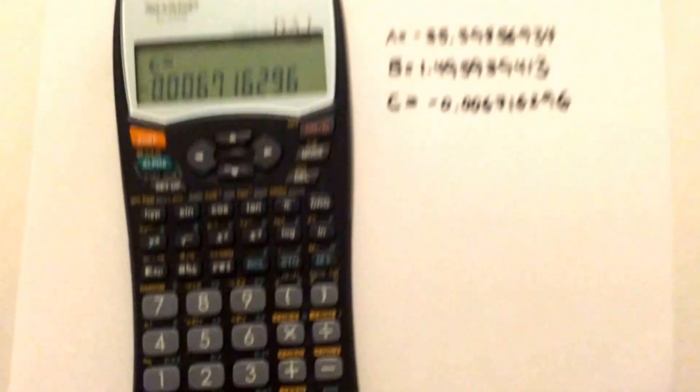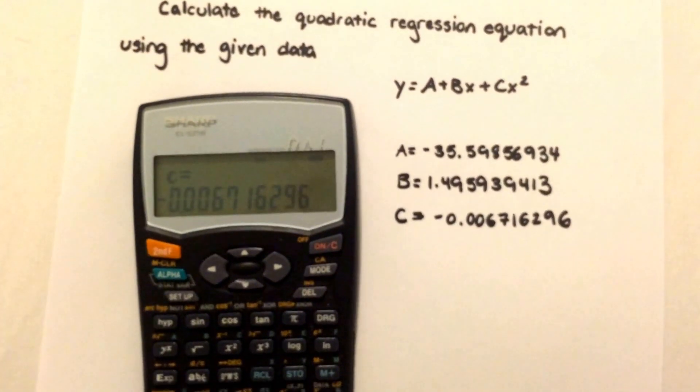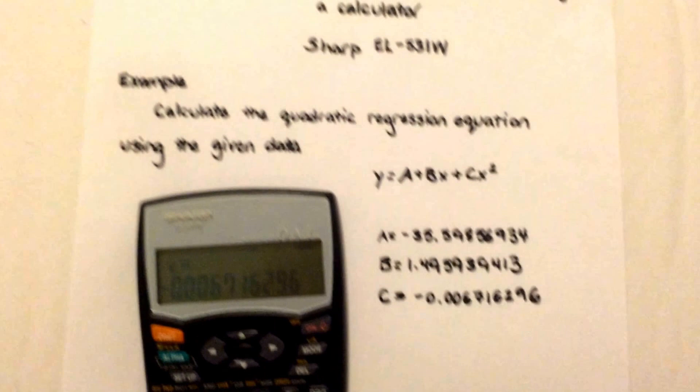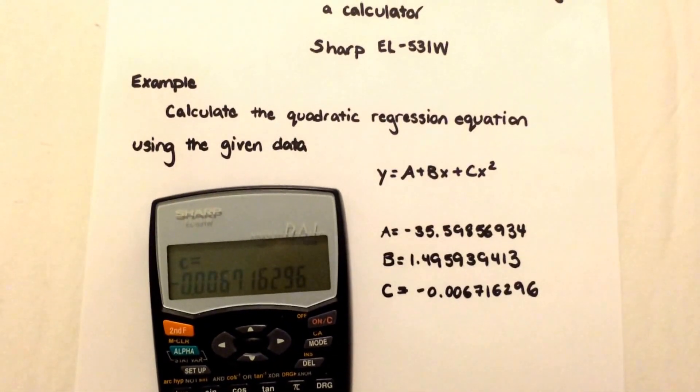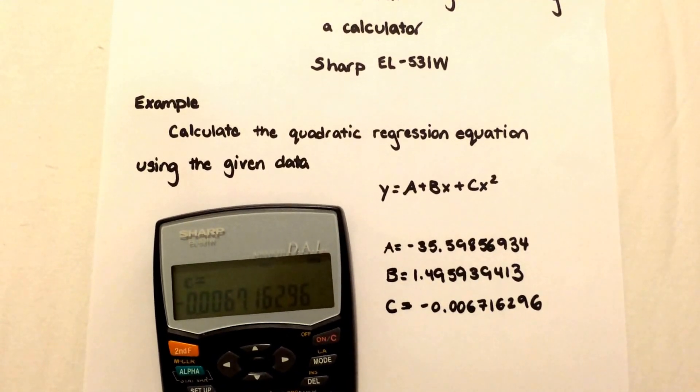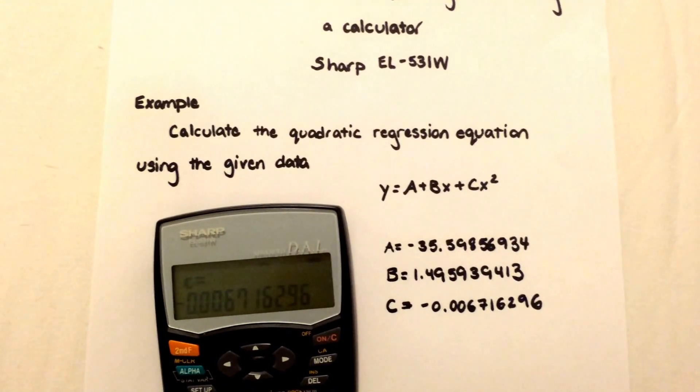And there you have your A, B, and C value from your calculator for a quadratic regression using the Sharp EL-531W. For more videos on how to use this calculator, please subscribe to my channel.